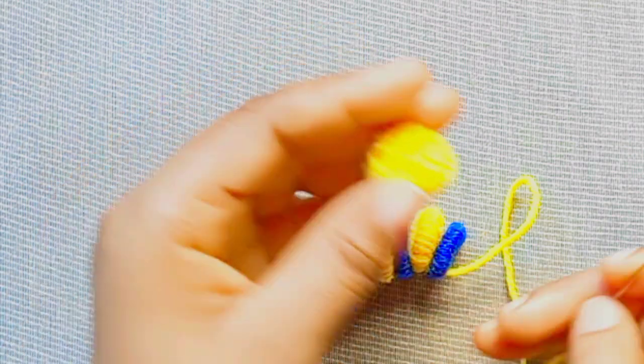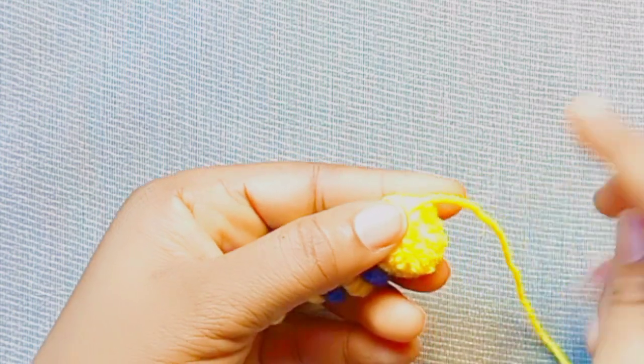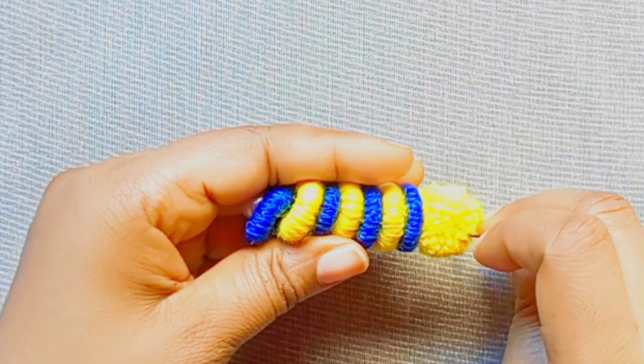At this point, attach the pom-pom which will form the head of the caterpillar, then sew back again, make a handle and then sew to secure.